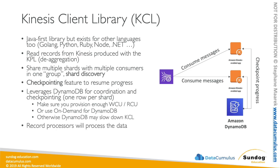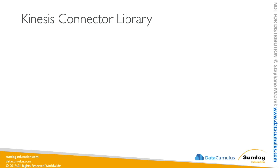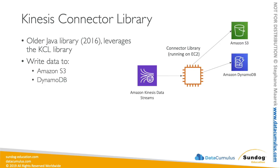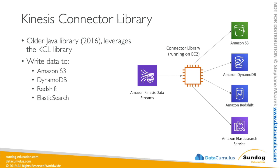KCL also has a record processors API to process data conveniently one message at a time. Key takeaways: KCL uses DynamoDB for checkpointing, has DynamoDB capacity limits to watch, and is used to de-aggregate records from the KPL. There's also the Kinesis Connector Library — also sometimes called KCL but distinct — an older Java library from 2016 that leverages the KCL under the hood. It's used to write data to Amazon S3, DynamoDB, Redshift, or Elasticsearch, and must run on an EC2 instance.